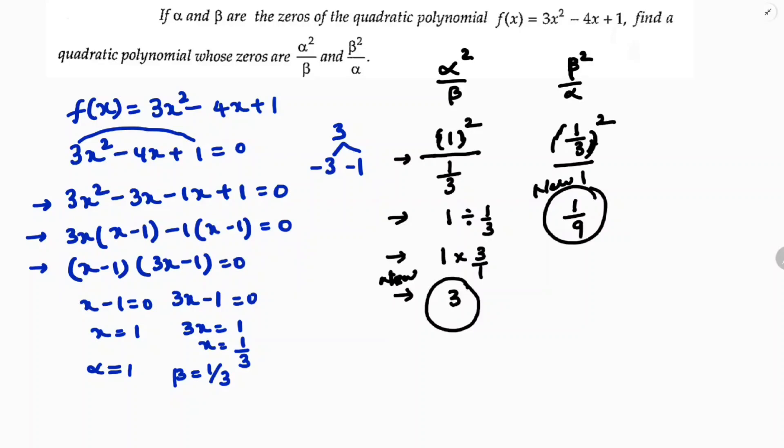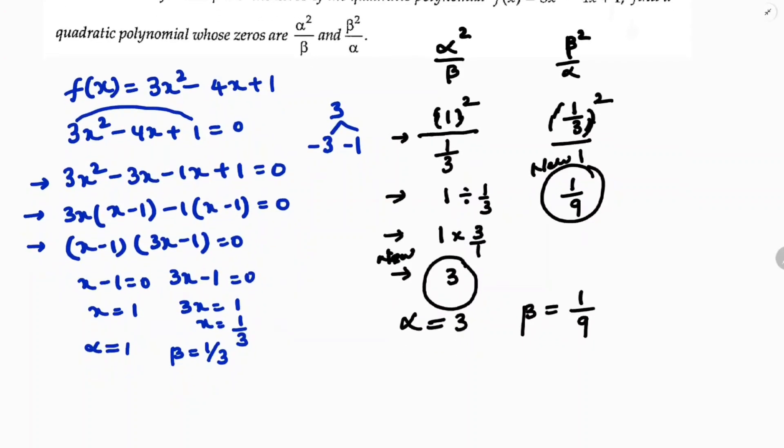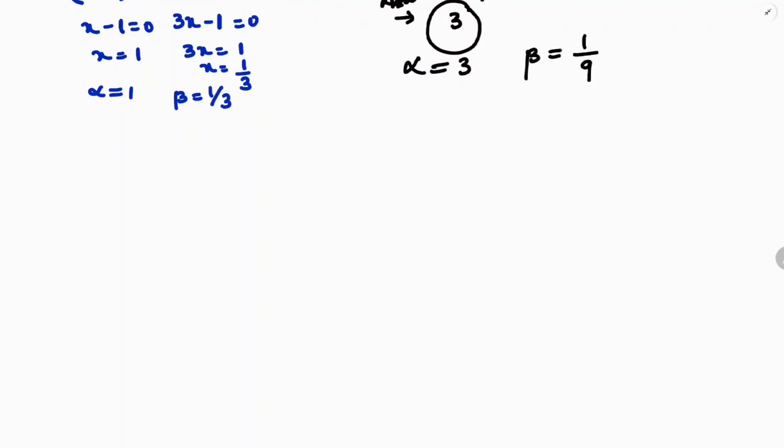I will find sum and product. New alpha is 3, new beta is 1/9. Now I will find sum and product, then I will find the quadratic polynomial. First, sum of the zeros: α + β = 3 + 1/9. LCM is 9. 9 × 3 is 27 + 1 = 28/9. So α + β = 28/9.